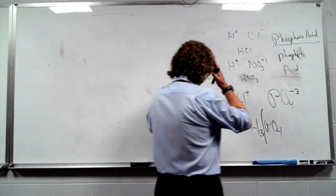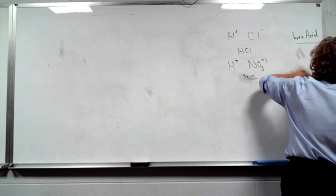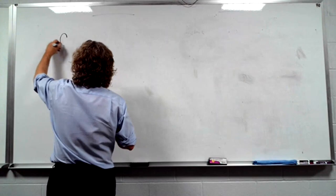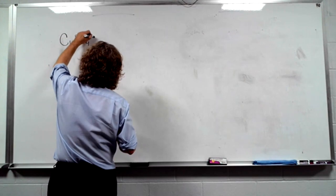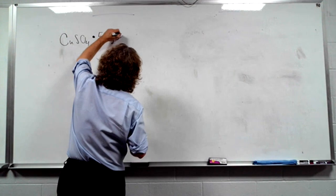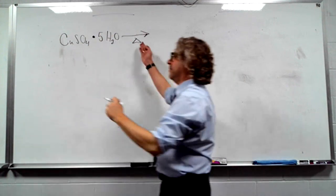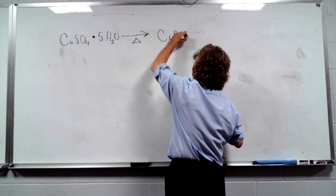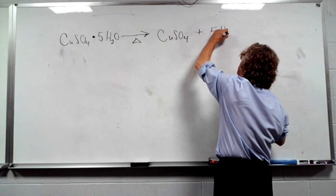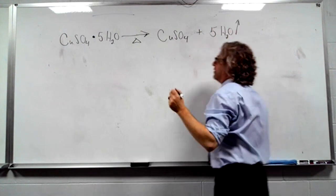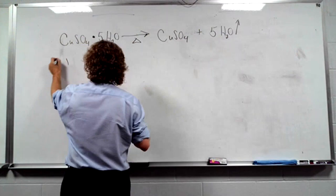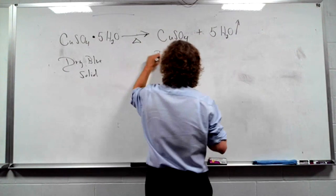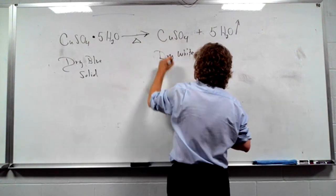I'm going to tell you something. CuSO4·5H2O — I will heat it up, because delta means heat, and I'll make CuSO4 plus 5H2O that will fly away as a gas because of the heat. This is a dry blue solid, and this is a dry white solid.